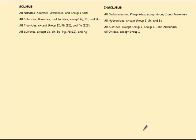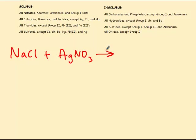Let's say we have sodium chloride plus silver nitrate. Normally in my directions, I'll say both reactants are in aqueous solution unless otherwise indicated. NaCl is a chloride and not one of the exceptions, so it dissolves in water — it's aqueous. Silver nitrate is a nitrate, and all nitrates are soluble, so that one will also be dissolved in water.